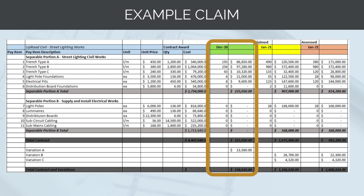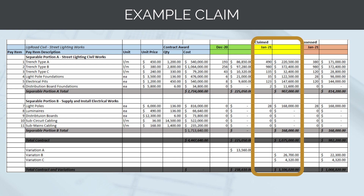Under the green section, we have what was previously claimed and paid to the subcontractor for December works. In December, we paid Uproad Civil $238,610, assessing that they completed 193 metres of trench type A, 256 metres of trench type B, 43 metres of trench type C, six light pole foundations and eight electrical pits, as well as an approved variation of $13,560. In the yellow section, we have what Uproad Civil is claiming for January 2021 — 490 metres of trench type A, 980 metres of trench type B, and so on. Under Separable Portion B, they have also installed 28 light poles but completed no other electrical works. They are also claiming two variations: Variation B worth $26,700 and Variation C worth $4,320. This claim totals $1,106,020.